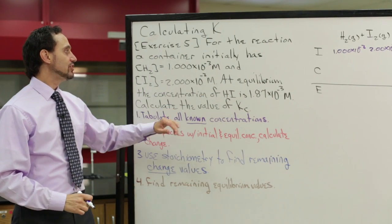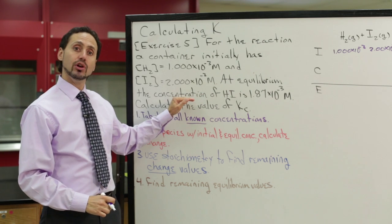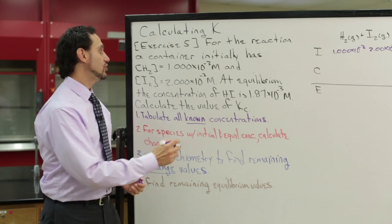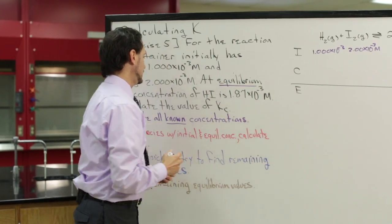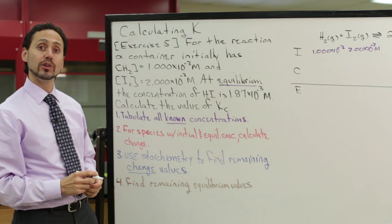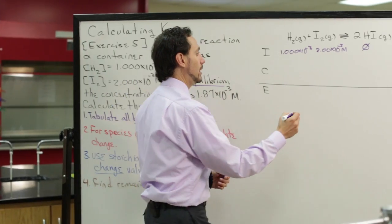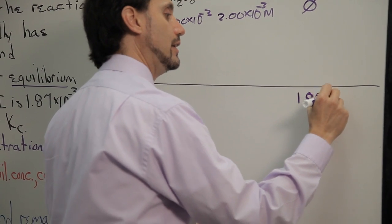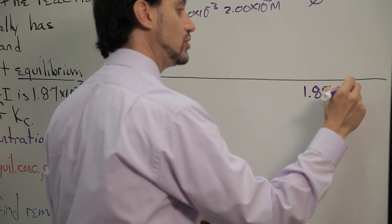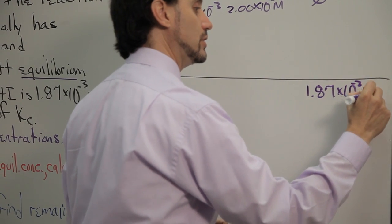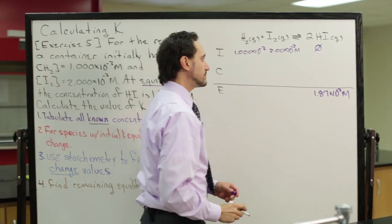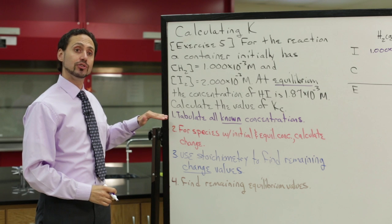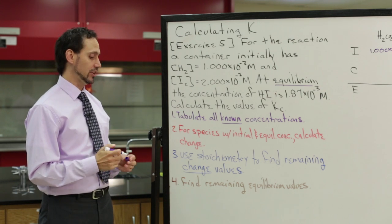The next sentence states that at equilibrium, we do know what the concentration of hydrogen iodide is. So we can add that equilibrium concentration to our ICE table. For hydrogen iodide, the equilibrium concentration is 1.87 × 10⁻³ M. We've now tabulated all of the known concentrations given to us in the problem.